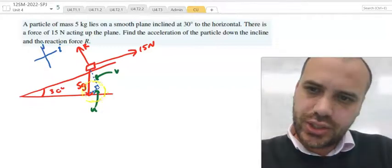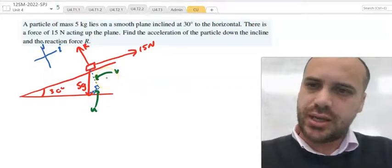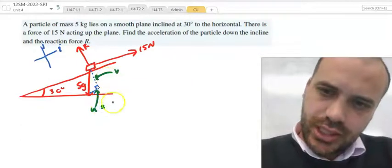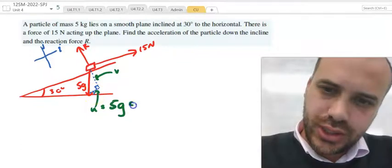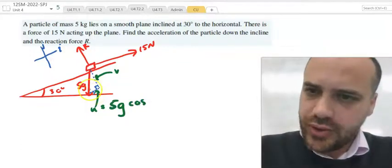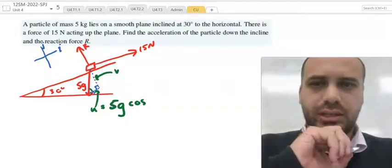So, if I call this one vector u and this one vector v, vector u is going to be equal to 5g cosine of this angle right here.